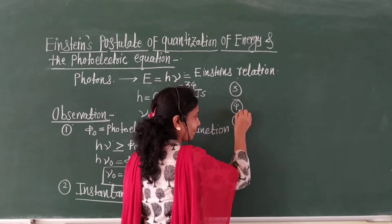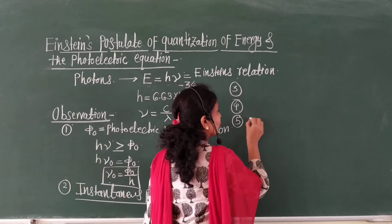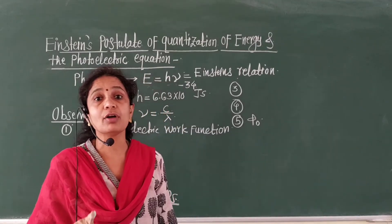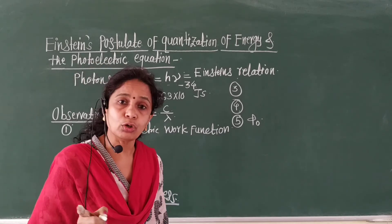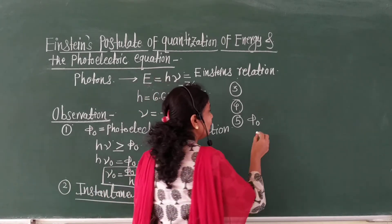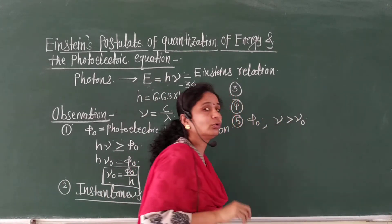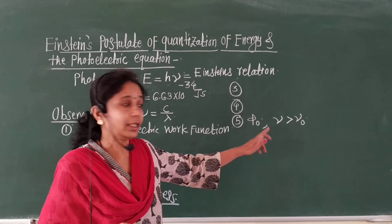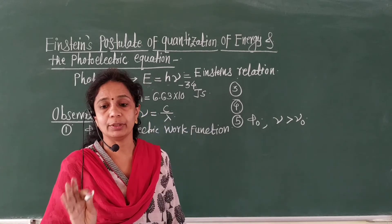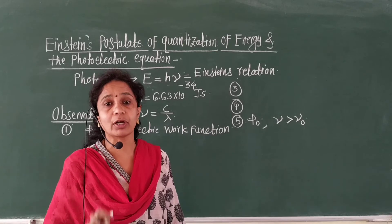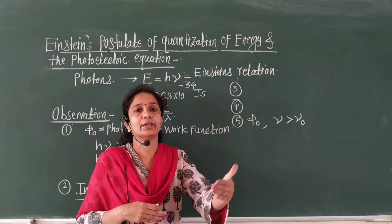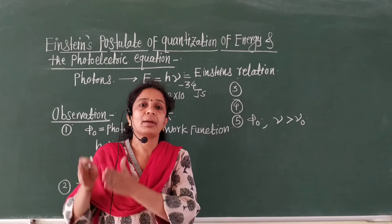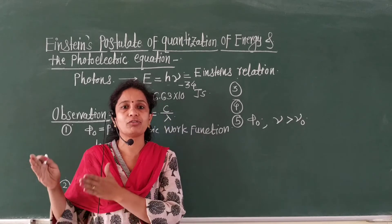Fifth point: φ₀ is the photoelectric work function. Photoemission will be possible only when ν should be greater than ν₀. As the frequency of the incident radiation is greater than the threshold frequency ν₀, there will be photoemission. The photoelectric work function is used to release the electron from the metal surface, and the remaining energy is used as maximum kinetic energy of the photoelectrons.